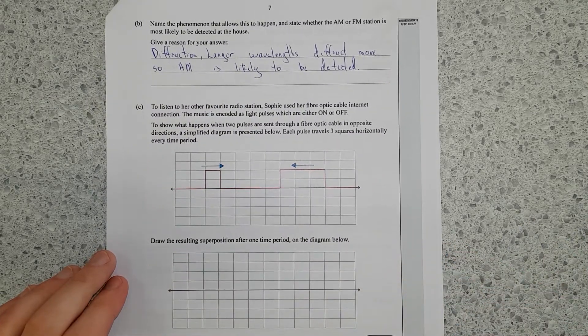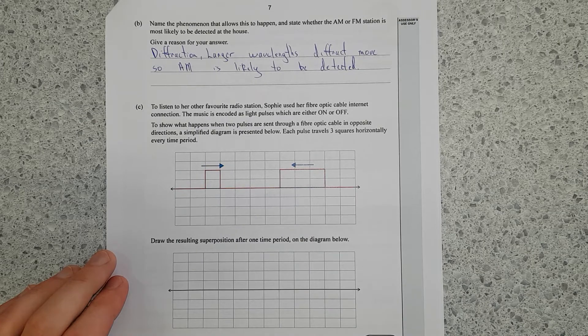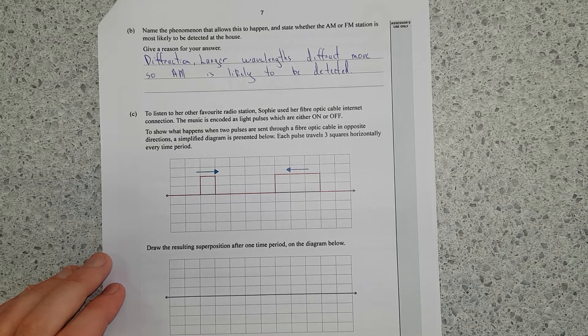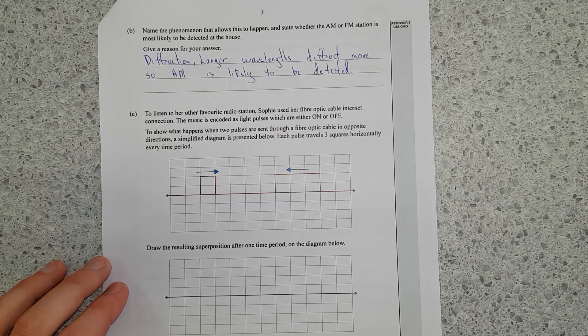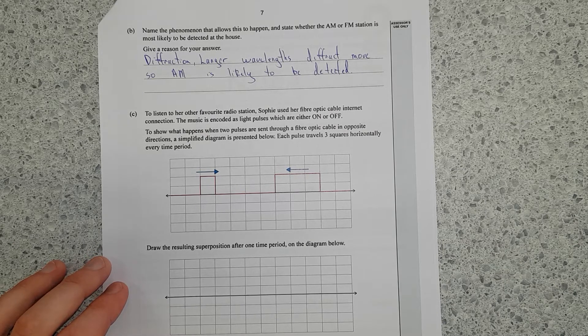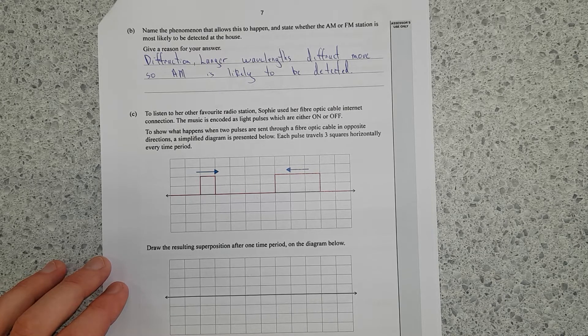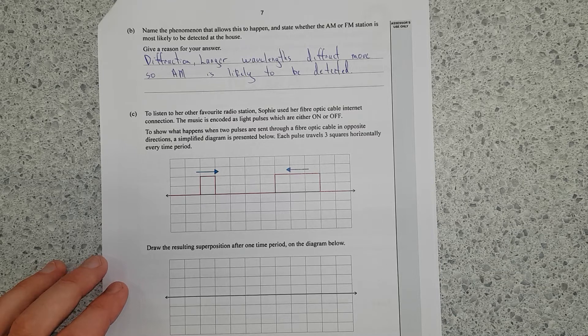Next question. To listen to her favorite radio station, Sophie used her fiber optic cable internet connection. The music is encoded as light pulses, which are either on or off, or binary. To show what happens when two pulses are sent through a fiber optic cable in opposite directions, a simplified diagram is presented below. Each pulse travels three squares horizontally every time period.